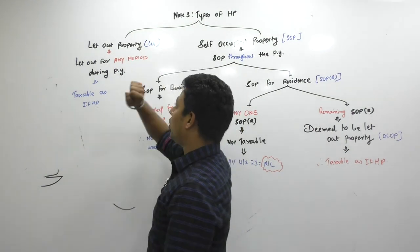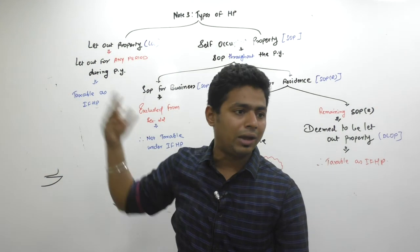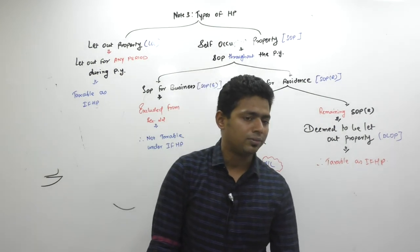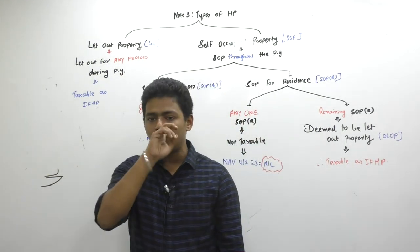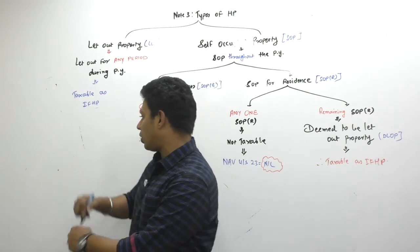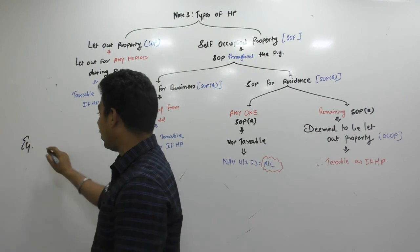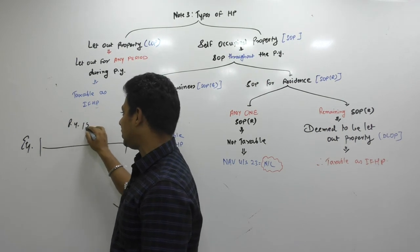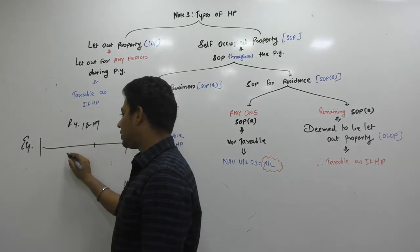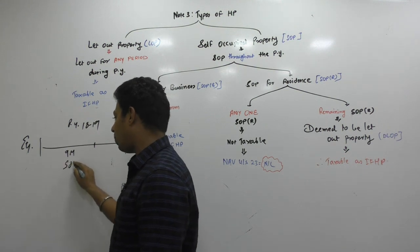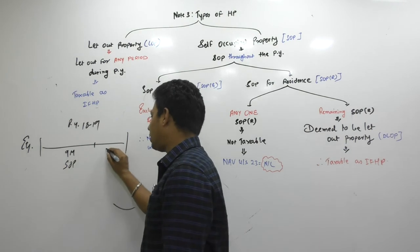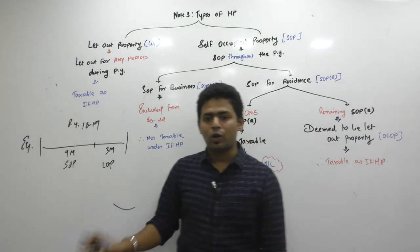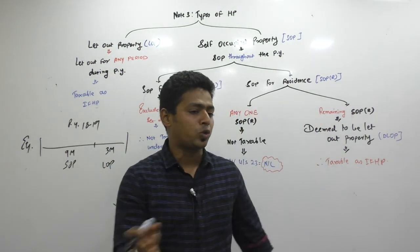If property is let out, then that property will be known as LOP — let out property. LOP is a taxable property because it is earning rent. Now, when a property becomes let out, consider this example on the timeline. The previous year is 18-19. The first nine months, property was SOP, and after that, property became LOP. So what should I call this property? There are different laws for SOP and different laws for LOP. What should I call this particular property by reading the definition of LOP?